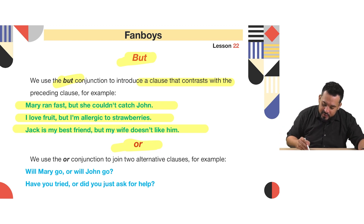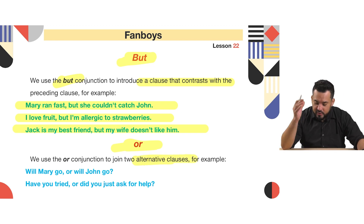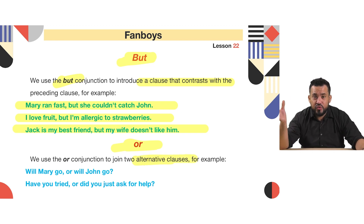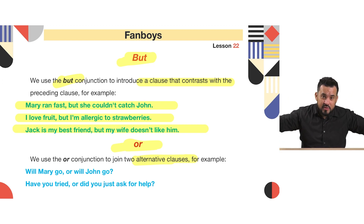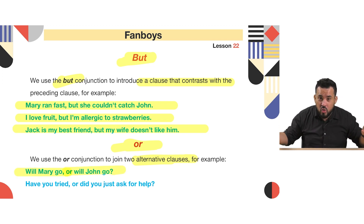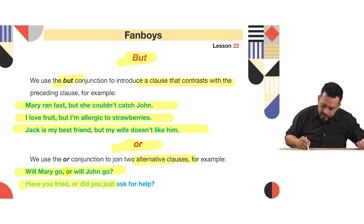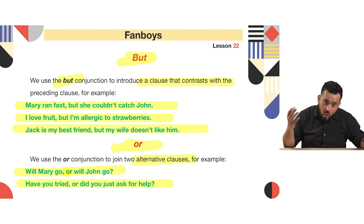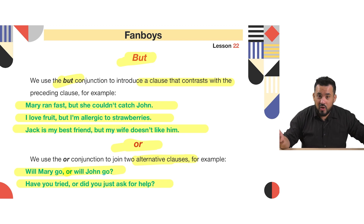'Or' is another FANBOY — the third one today. It is used to join two alternative clauses, meaning you have a choice between one or the other. Examples: 'Will Marie go or will John go?' 'Have you tried, or did you just ask for help?'